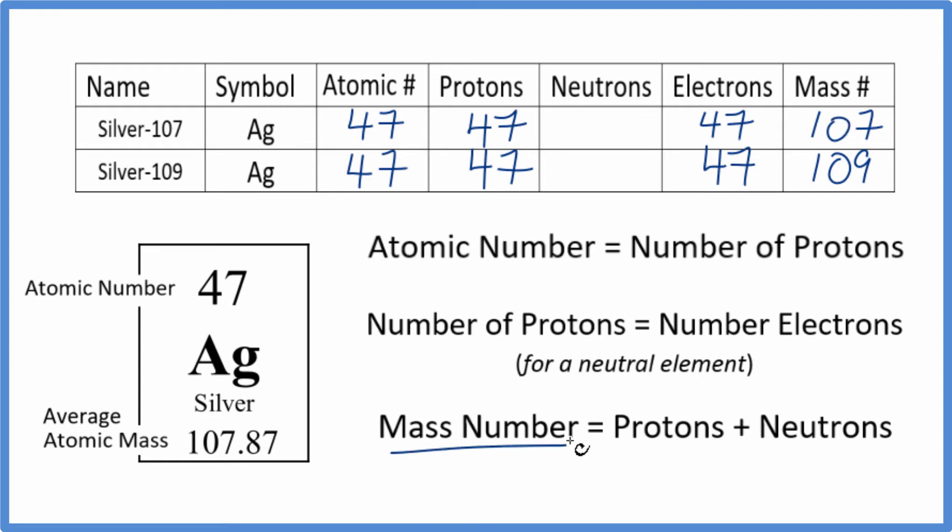The mass number equals the protons plus the neutrons. So 47 plus something gives us 107. 47 plus 60, that adds up to 107. So the number of neutrons in silver-107 is 60.